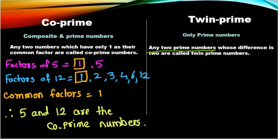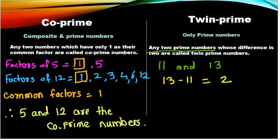Now we will see twin prime numbers. In twin prime numbers, only prime numbers are considered. Let us take two prime numbers: 11 and 13. The difference between them is 2, and since the difference is 2, we can say 11 and 13 are twin prime numbers.